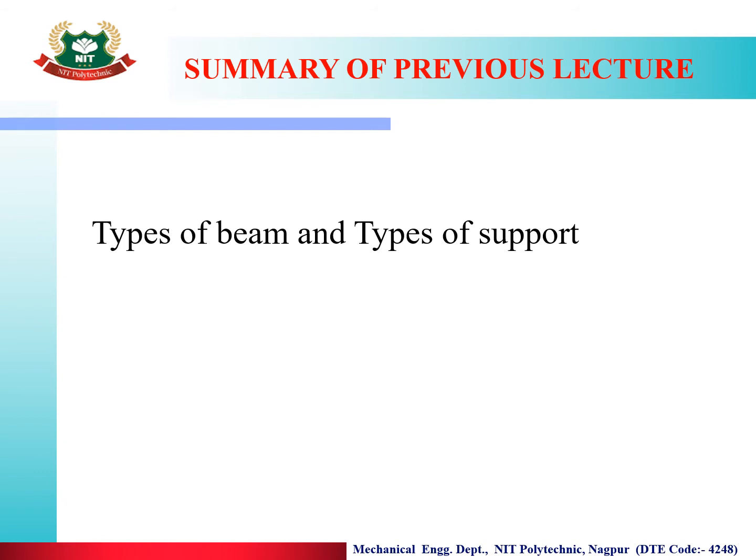Let us summarize the previous lecture. In previous lecture, we have discussed about the types of beam and types of support. In types of beam, we discussed about simply supported beam, cantilever beam, overhanging beam, continuous beam and truss beam. We have also discussed about fixed support, simply support, roller support and hinge support. Aap sabhe nai in questions ko achche se dekha hooga, unki diagrams ko bhe aapne achche se identify kiya hooga.